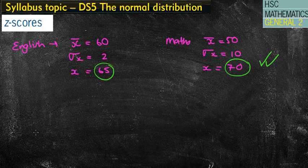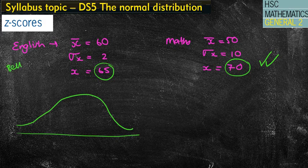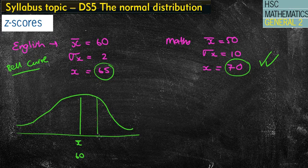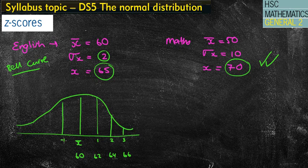Let's have a look at this in a normal distribution. I'm going to draw a bell curve — I love bell curves, they bring a lot of meaning to what you're doing. The bell curve has the mean in the middle. For the English exam, the mean is 60. The standard deviation tells us how far above the mean we are. One standard deviation is 62, two is 64, three is 66. One below is 58, two below is 56, three below is 54. We've got a very small standard deviation and the scores are bunched between 54 and 66.